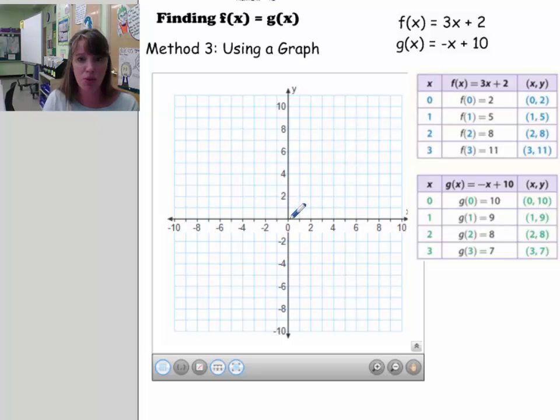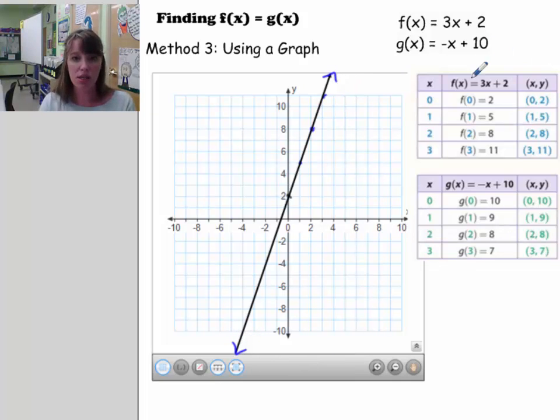So (0,2) is going to be 0 up 2 like this. (1,5) will be over 1 and up. Let me go ahead and plot them in blue. (1,5) will be here. (2,8) will be here. And (3,11) will be over 1 and up right here. So these are all the set of values here that are parts of the solutions. So I'm going to go ahead and do this right here. And I'm going to put arrowheads on my line. So here's the arrowheads on my line. So this is the function f(x) is equal to 3x plus 2.